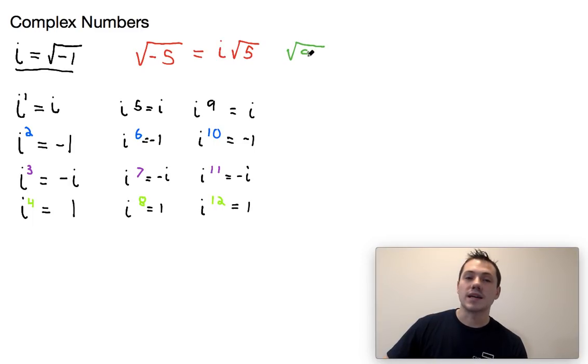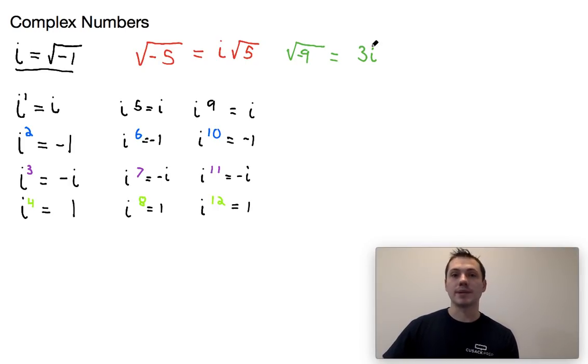Another type of problem that you might be asked would involve a little bit more simplification. Maybe you had something like the square root of negative 9. Well this is just kind of a radical question. The square root of 9 is equal to 3 and the square root of the negative would be i. So we can take this out as 3i. So pretty simple, nothing really too complicated about that.